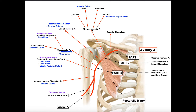The first branch of part two is the thoracoacromial artery, which itself has four branches: an acromial branch, a deltoid branch, a clavicular branch, and a pectoral branch. Out of these, two are particularly important. The deltoid branch supplies the anterior deltoid. The pectoral branch supplies pectoralis major and pectoralis minor, which makes sense because the thoracoacromial artery emerges from right underneath pectoralis minor.